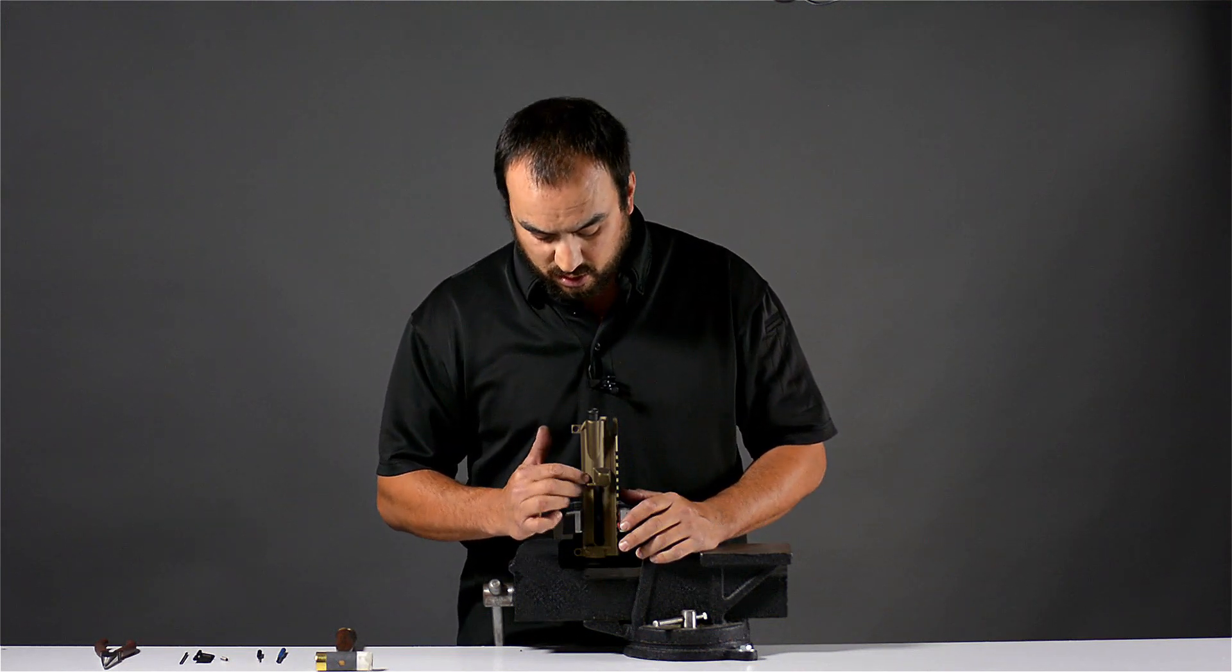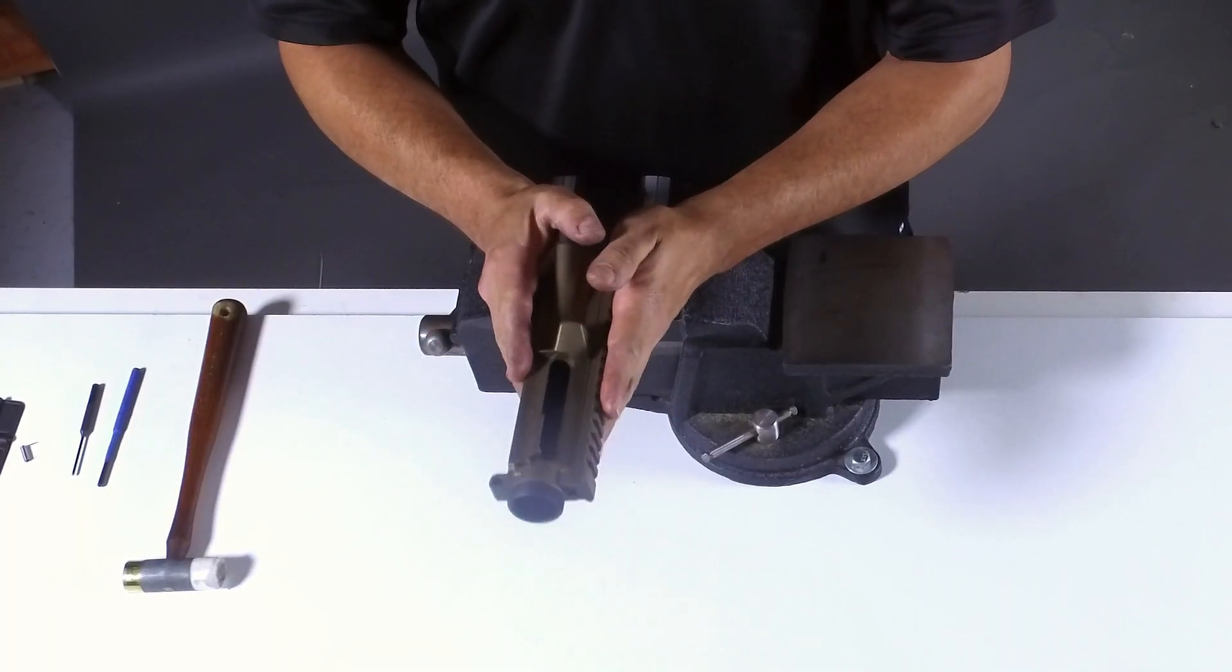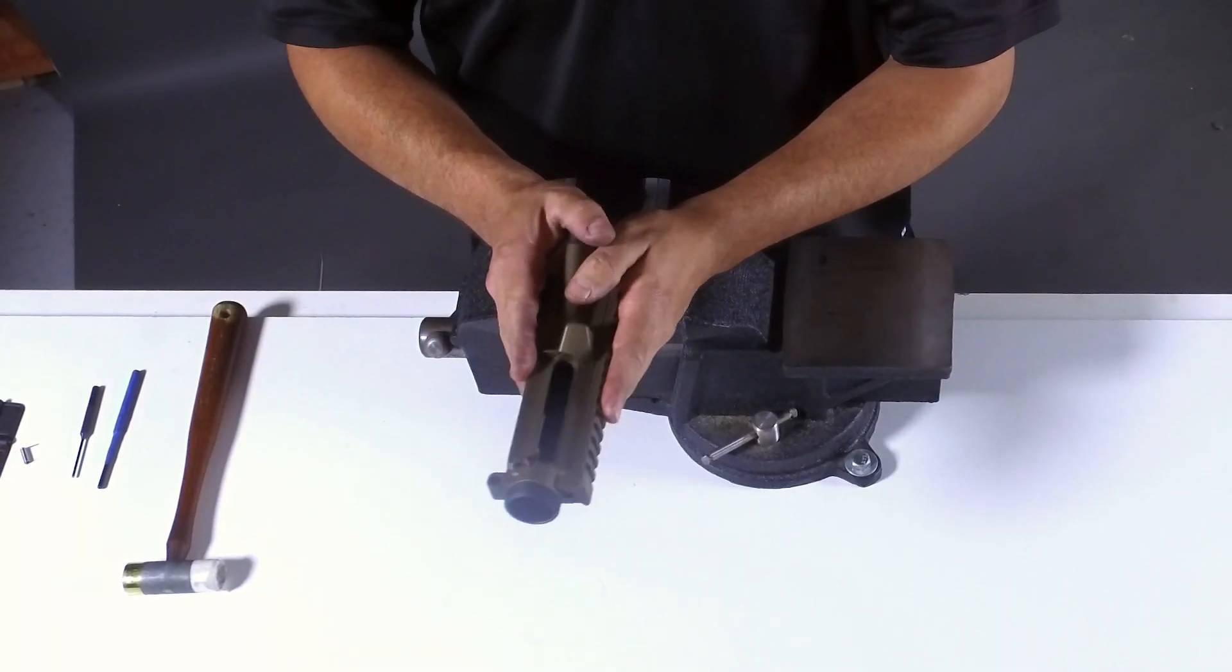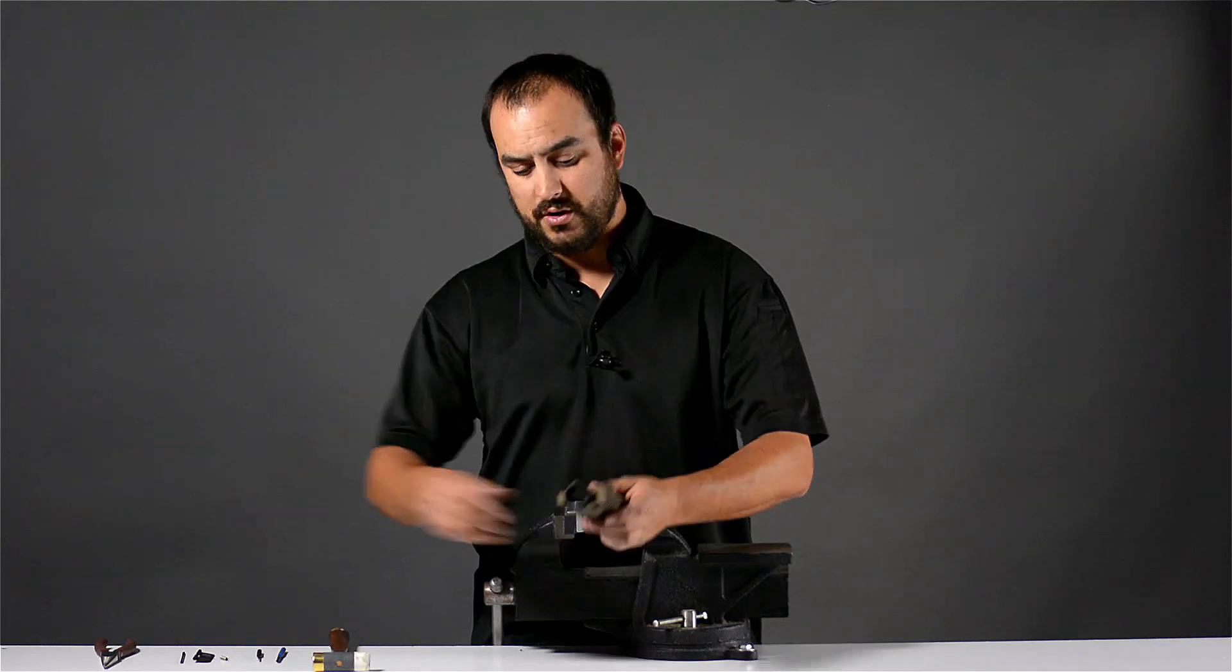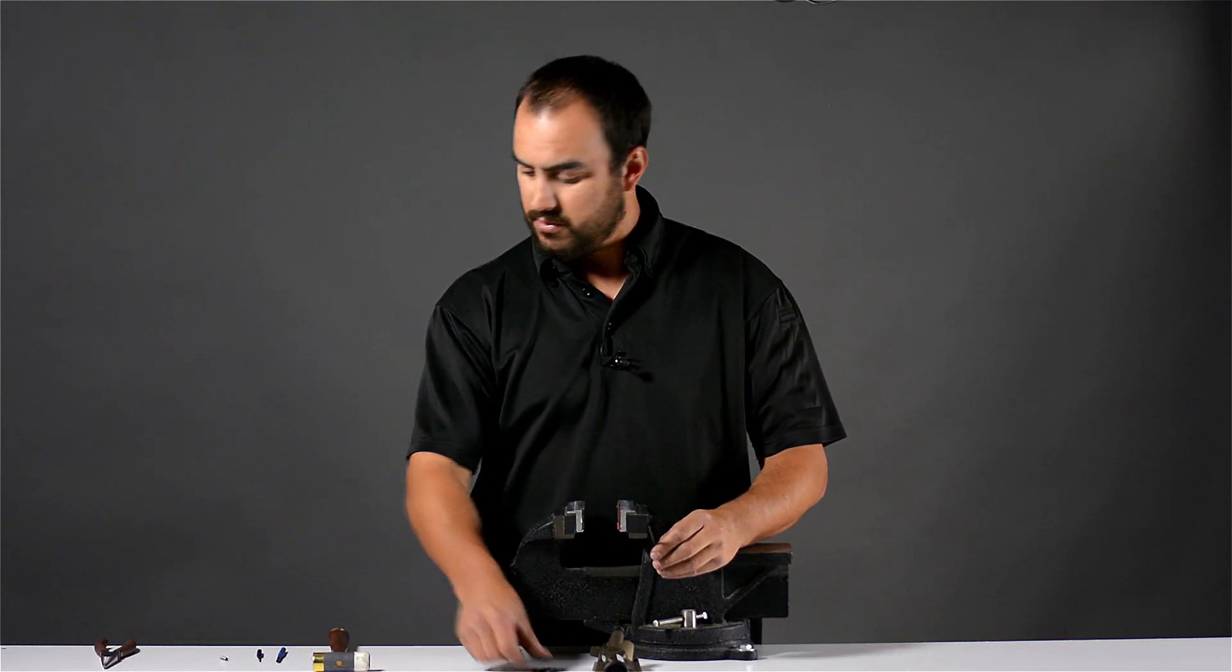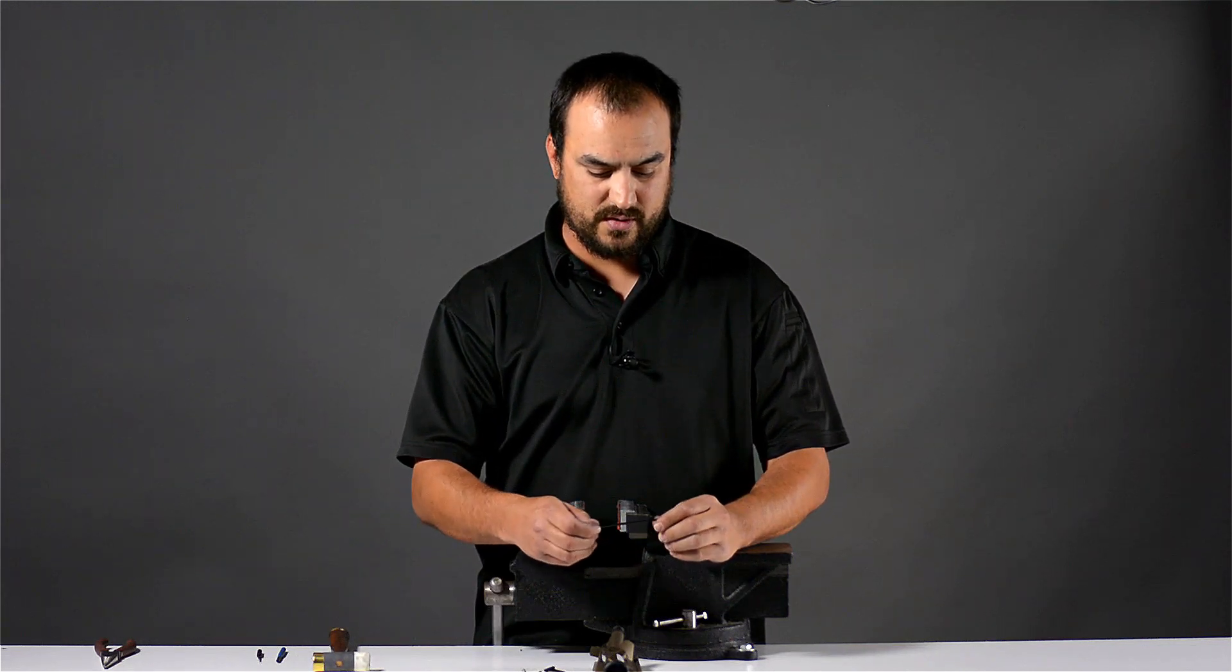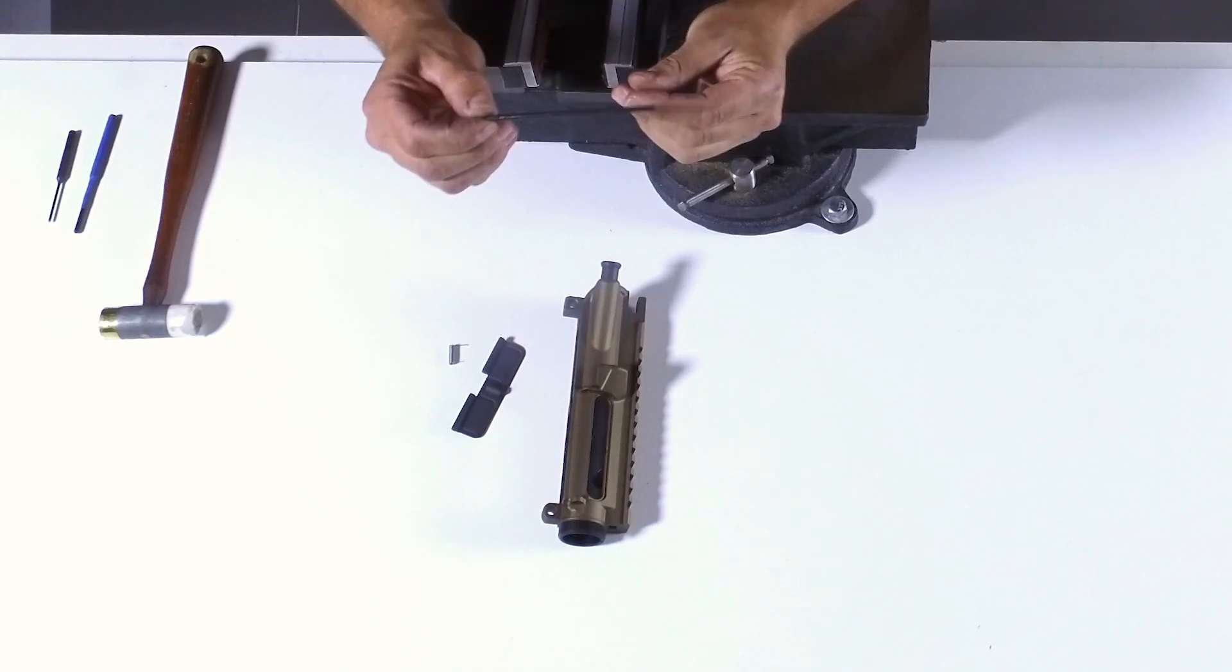Next step is we are going to install the dust cover. I like to remove the receiver from the vise. That way I have better manipulation of the receiver in my hand. First thing we are going to do is grab our components. We have the rod for the dust cover. On these rods, on one side there is a groove cut in there and there is a little c-clip that attaches to this.